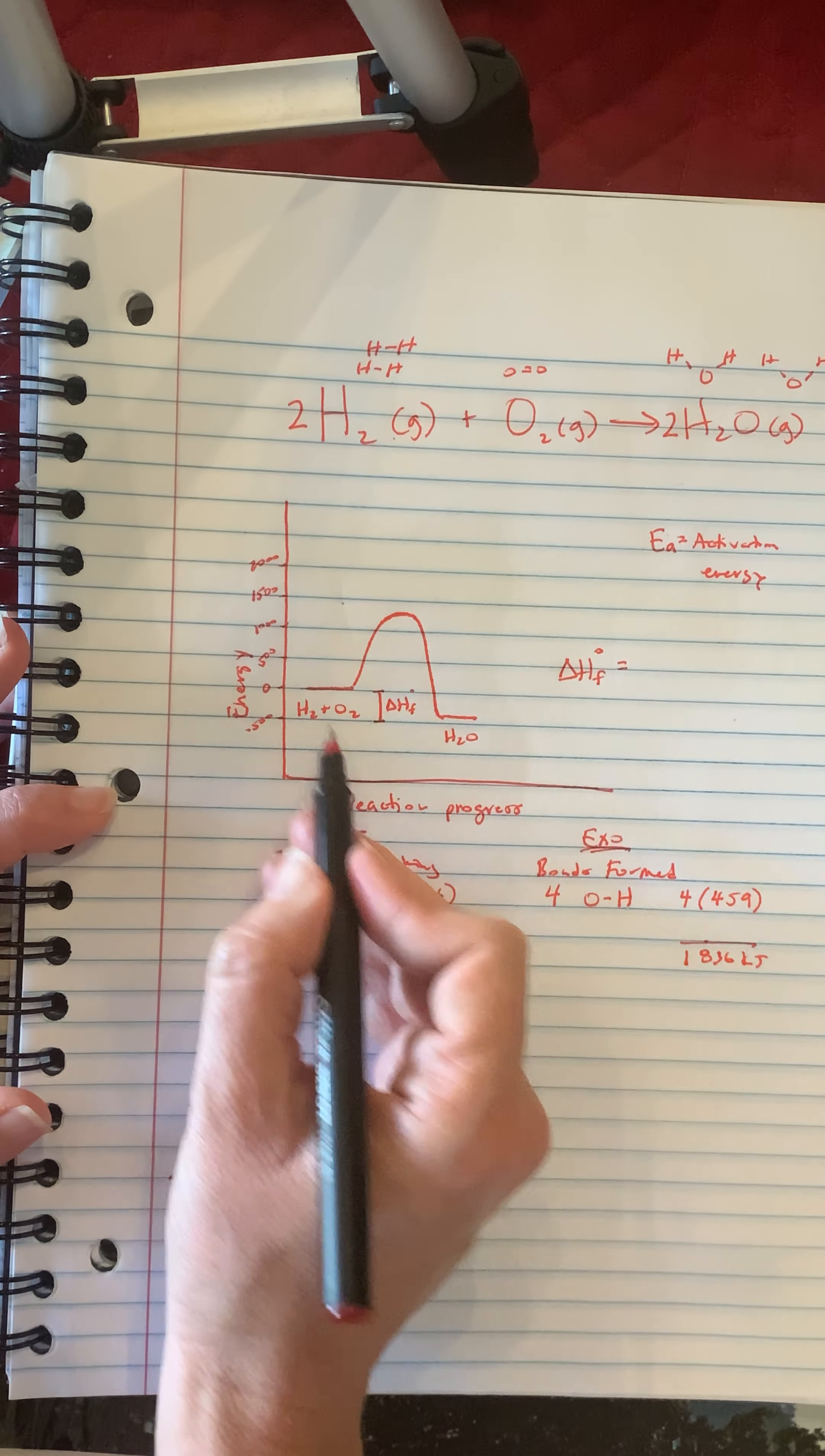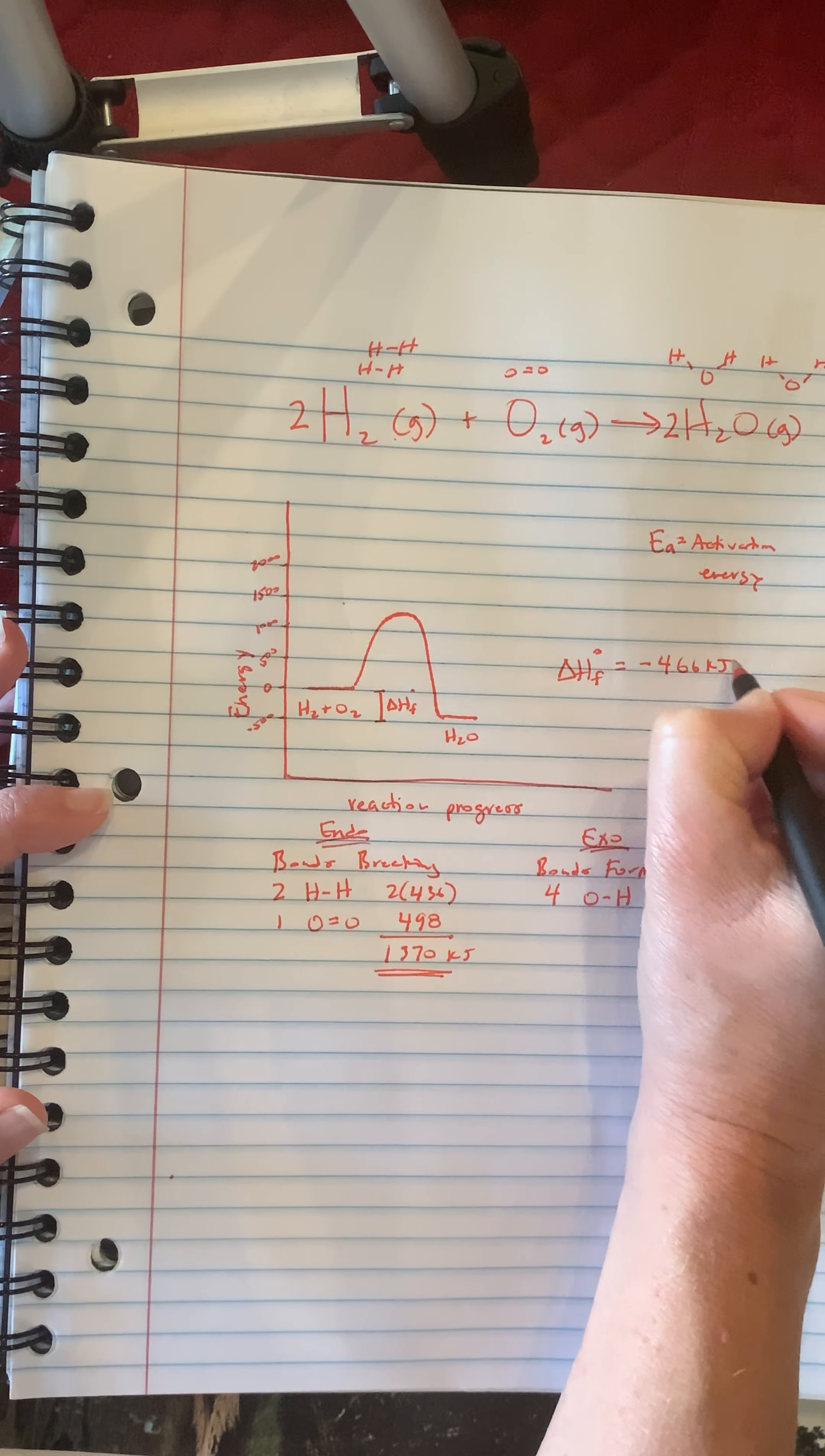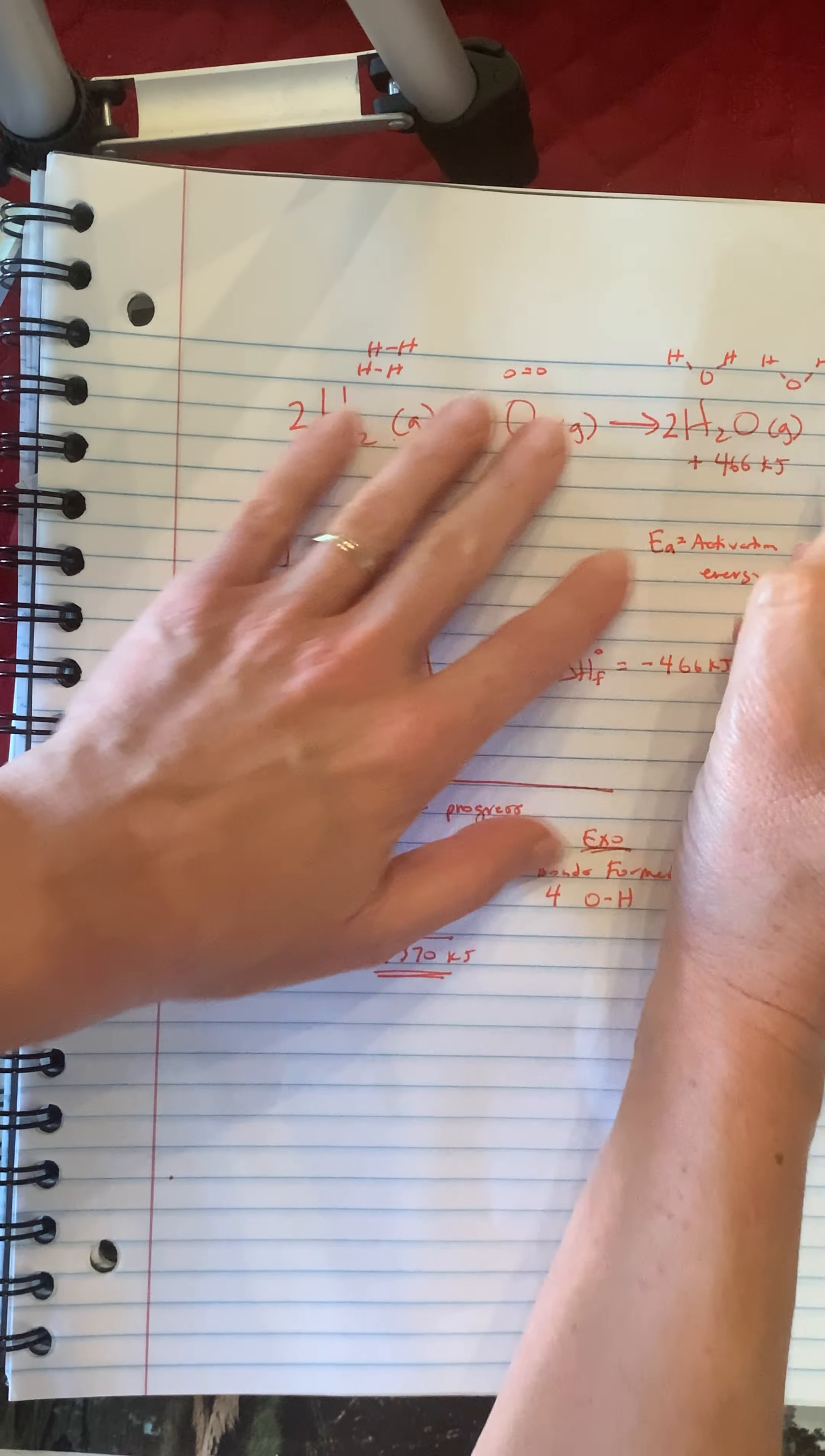And what is that? That is this amount, okay, how much we got out minus this amount, how much we put in. And when we do that math, we will see that it's negative 466 kilojoules. That negative means heat is given off. I can add that up here to my reaction. I'm going to put it right below. Plus I could put plus heat or I can put the actual amount now that we know it. There's 466 kilojoules. So my products.